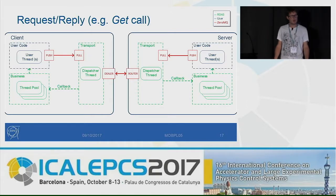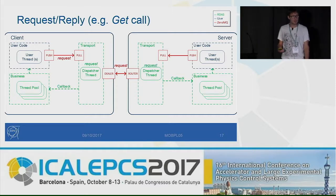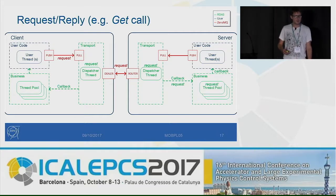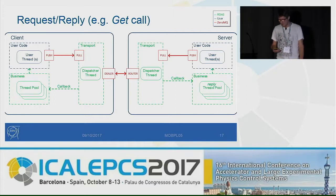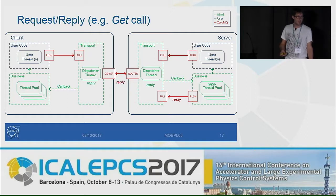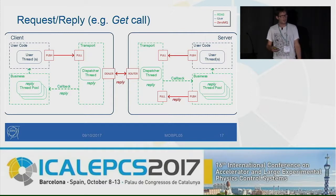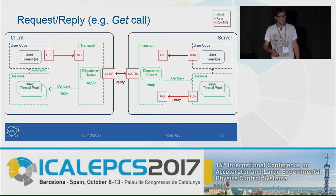Let's see a simple request-reply call — a get call, for example. The request always originates from some user threads, then goes to the push pool. It's handled by the dispatcher on the client side, then it goes through the network through the dealer-router. It reaches the dispatcher on the server side, which performs the callback. At some point, one thread of the pool will pick up the request and give it back to the user code. User code processes the request and sends back the reply. We don't have any separate channel to send it back, so we simply use push-pull as well to push the reply back to the transport. It goes again through the network, is handled on the client side, and likewise a callback is performed on the user code to give back the reply.